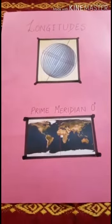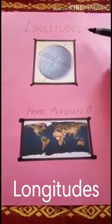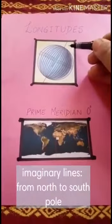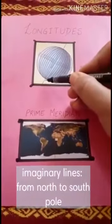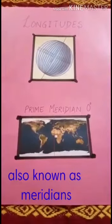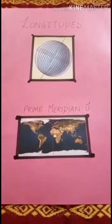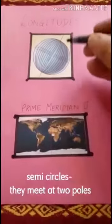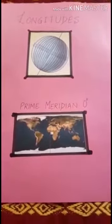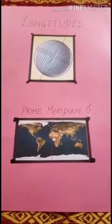Good morning students. Today I am going to explain about longitudes. Longitudes are imaginary lines running from the north pole to the south pole. These imaginary lines are also known as meridians. They are also numbered like the latitudes. They are semicircles that meet at the two poles. All the lines of longitudes are of the same length.